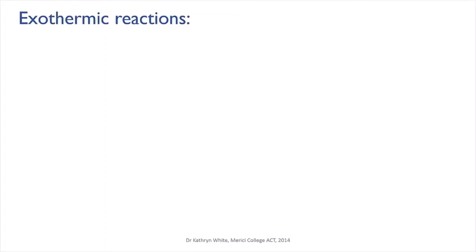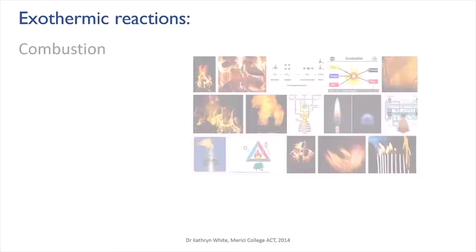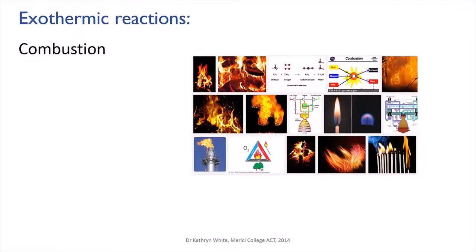There are a number of ways in which energy can be released in an exothermic reaction. In combustion, the most obvious way is that the energy is released in the form of heat. But notice that a flame gives light too, so combustion reactions often release light as well as heat.